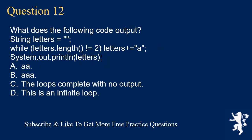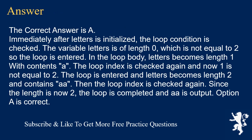Question 12. What is the following code output? String letters = ""; while (letters.length() != 2) { letters += "A"; } System.out.println(letters); A. A. B. AAA. C. The loop completes with no output. D. This is an infinite loop. The correct answer is A. The variable letters starts at length zero, which is not equal to two, so the loop is entered. After two iterations letters becomes "AA". Since the length is now two, the loop completes and "AA" is output. Option A is correct.